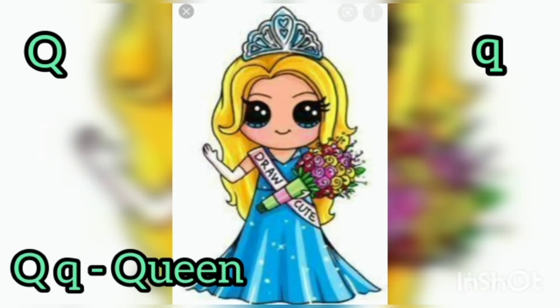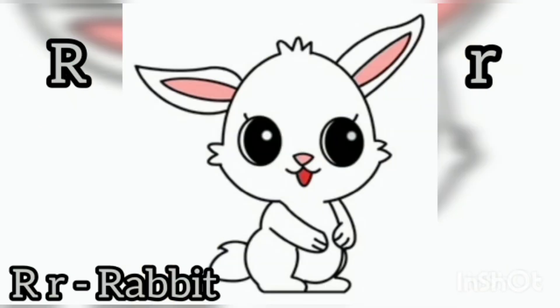Q for Queen, Queen means tope. R for Rabbit, Rabbit means tope.